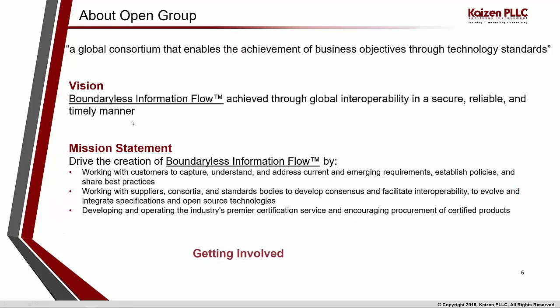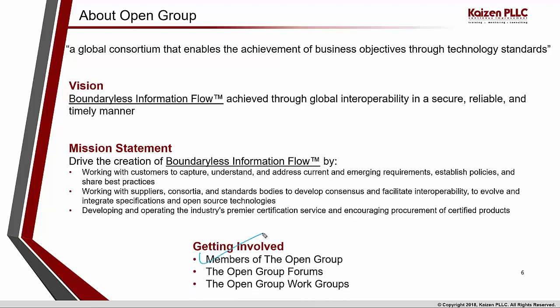How do members get involved? A member is any organization. The Open Group works at different levels of membership: they have members at platinum, gold, silver, academic, and consortia levels. Your organization can become part of any of these different levels of membership and contribute to the standard by becoming a member of the Open Group. By participating in many of the Open Group forums, each standard is backed up by a forum.